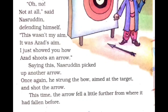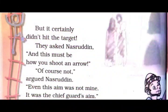Saying this, Nasruddin picked up another arrow — yeh bolkar Nasruddin ek doosra arrow utha leta hai. Once again, he strung the bow, aimed at the target and shot the arrow. This time, the arrow fell a little further than before — thoda aage gira — but it certainly did not hit the target.